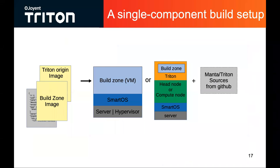In terms of what it would look like to build one of these components, clearly we need to start from the same origin image that we want our component to run with. That's really important because at build time, perhaps we run some compilation script or a configure script that detects the presence of some version of a library containing some particular function. We'd want to make sure that when we're running that software, we also run with a compatible library — or ideally the same library. So here I bring in this idea of having a build zone image, and that's based on the same origin image that we ultimately deploy the component with.